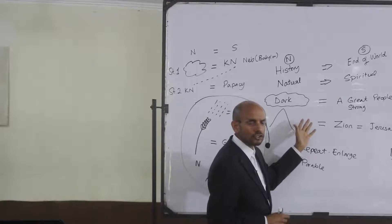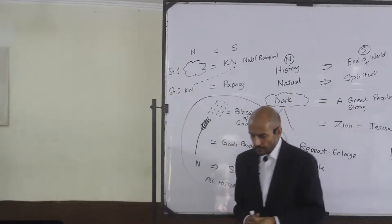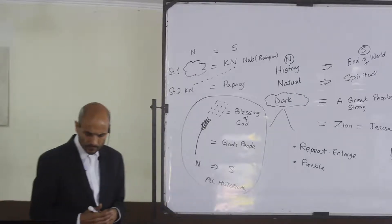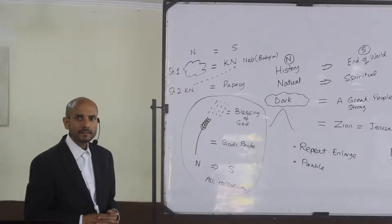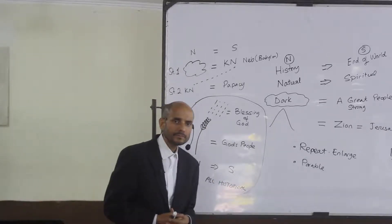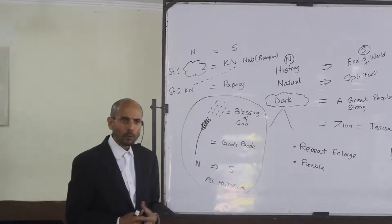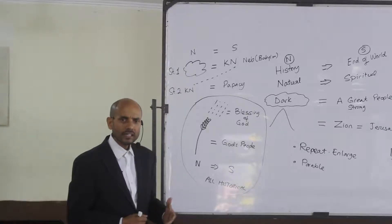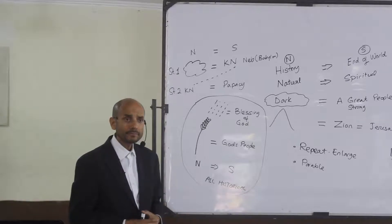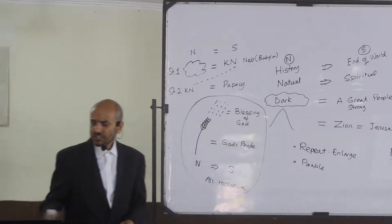The dark cloud, the strong mighty one, was a symbol of the army of Nebuchadnezzar — all of that is historical. The main reason the book of Joel was written was to teach us something about the end of the world. The northern army, Nebuchadnezzar and his kingdom of Babylon, becomes a symbol of the papacy at the end of the world.